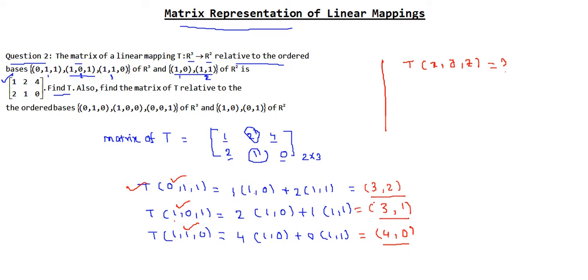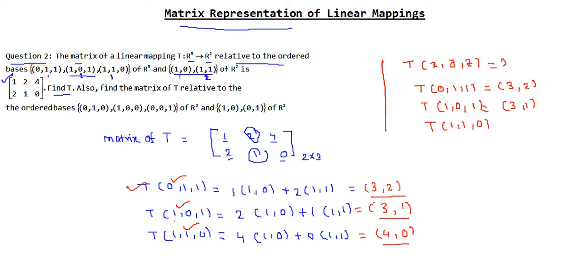So we have: T(0,1,1) = (3,2), T(1,0,1) = (3,1), and T(1,1,0) = (4,0).